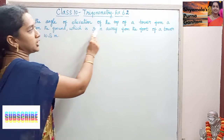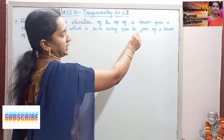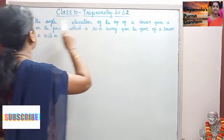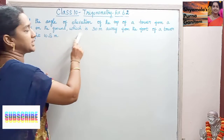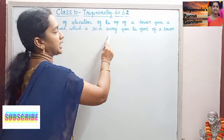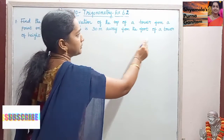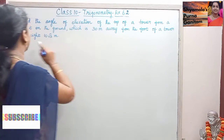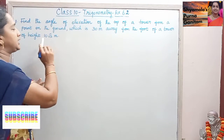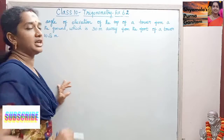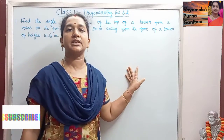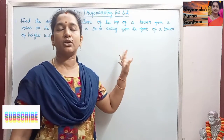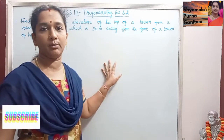Find the angle of elevation of the top of a tower from a point on the ground which is 30 meters away from the foot of a tower of height 10 root 3 meters. So in this exercise, we are going to see a word problem.